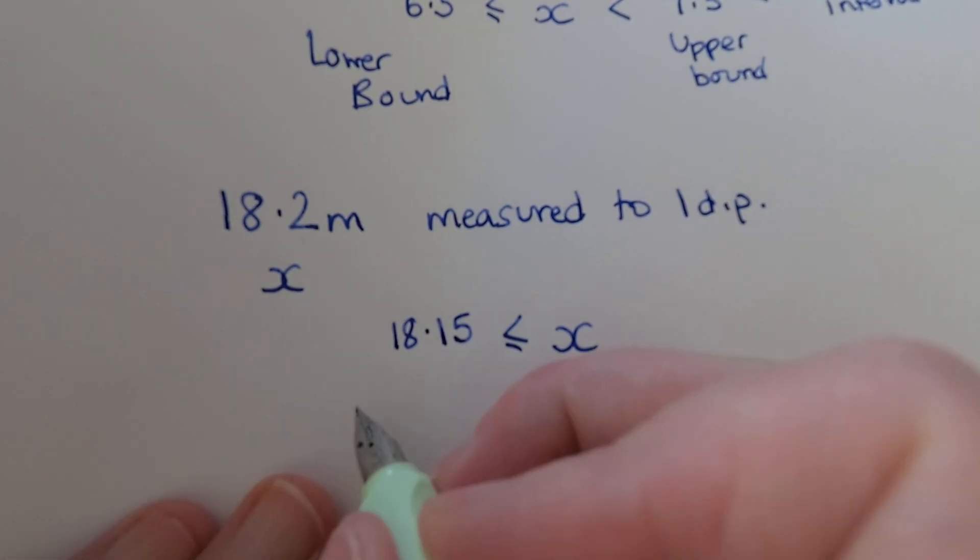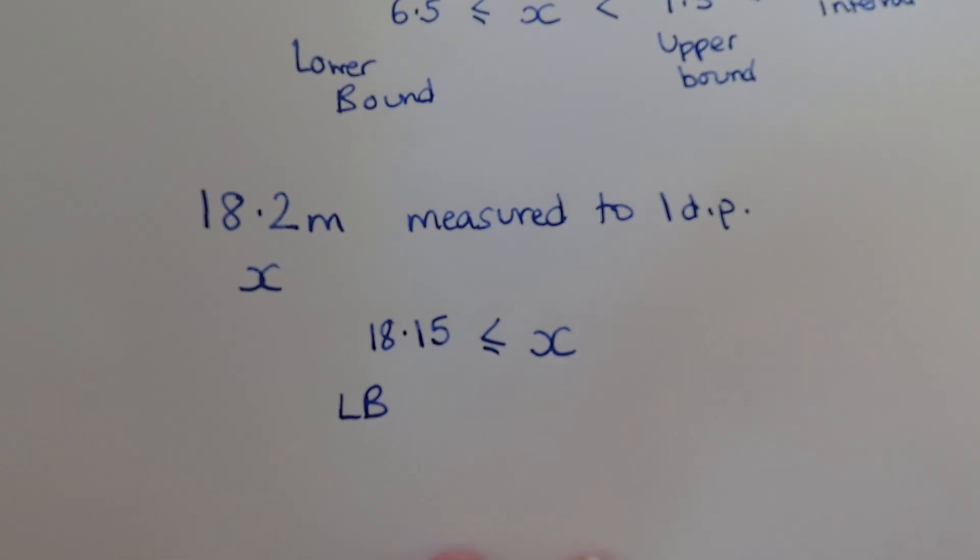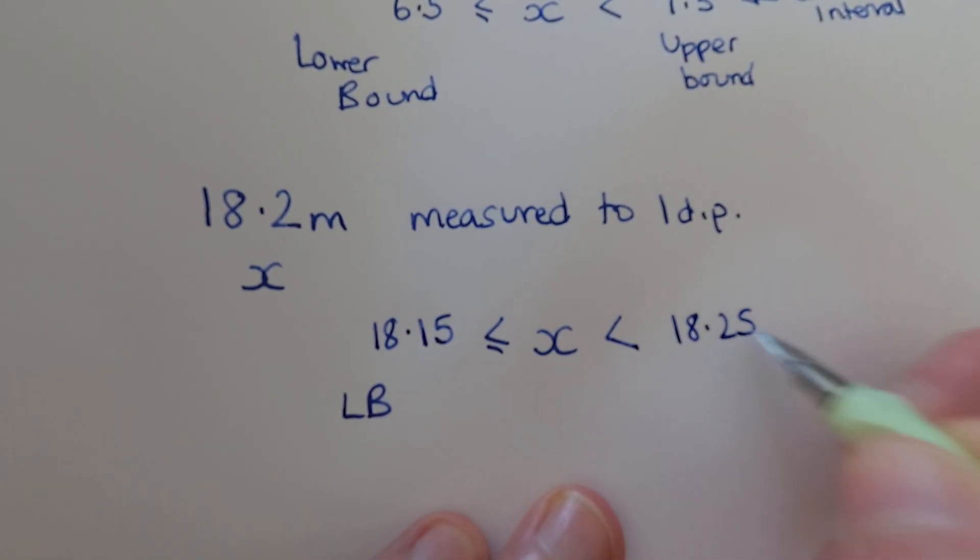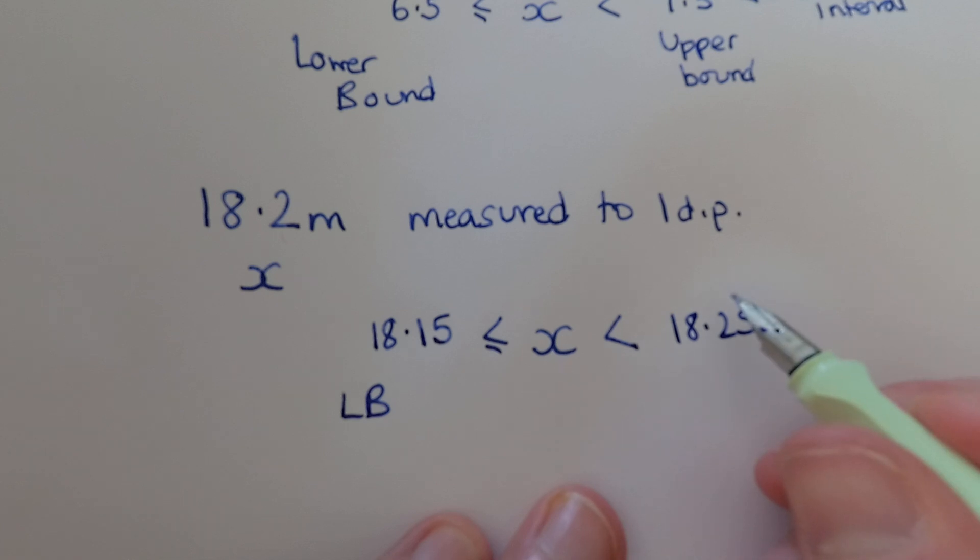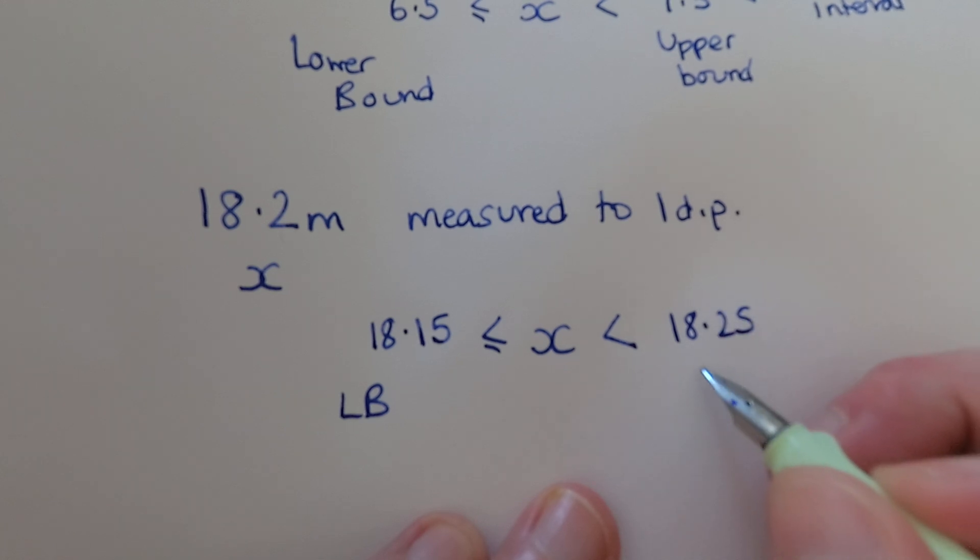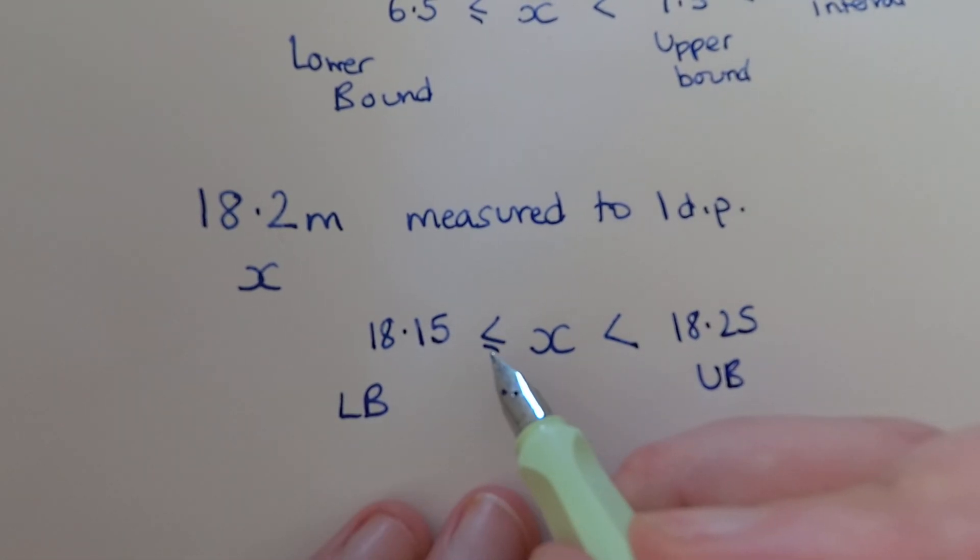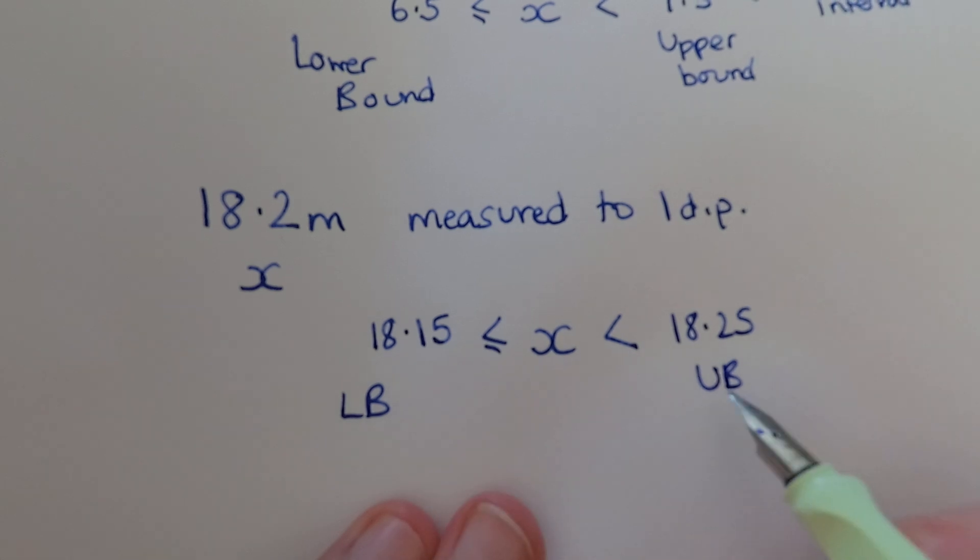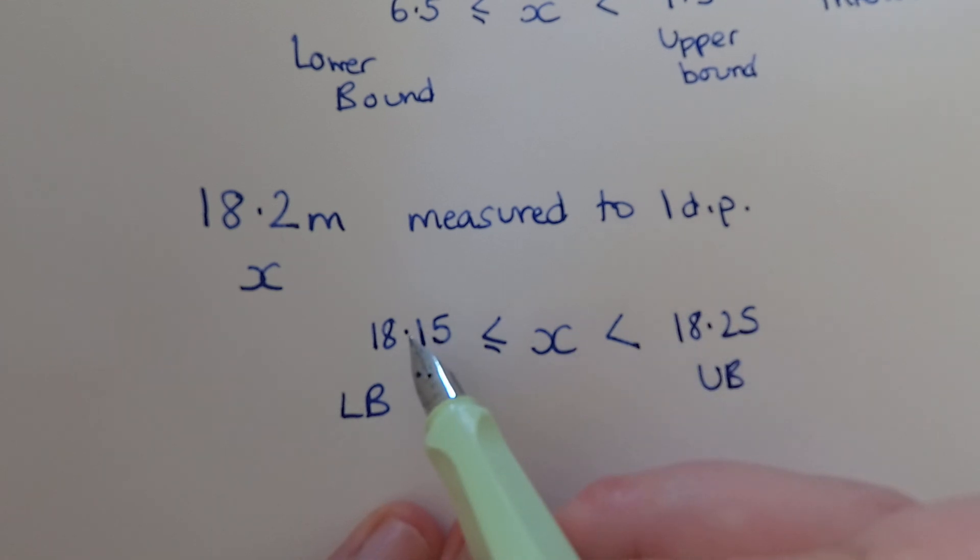So that's our lower bound, I'm just going to call it LB this time being lazy. The upper bound, well, 18.25, but it can't really be that because that would round up to 18.3. But that is the smallest amount that would round up to 18.3, so if we keep our inequality without the equal sign, keep it strict, then we're okay to say that this is our upper bound. So remember, equals there, no equals there, lower bound, upper bound. The range of this should be one decimal place, so if I did that take away that I should get 0.1, which I think you can probably work out is right.